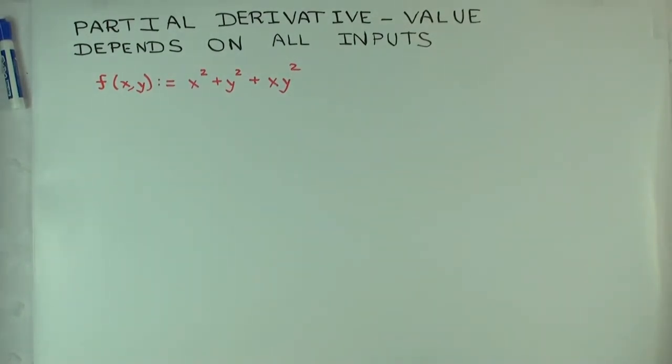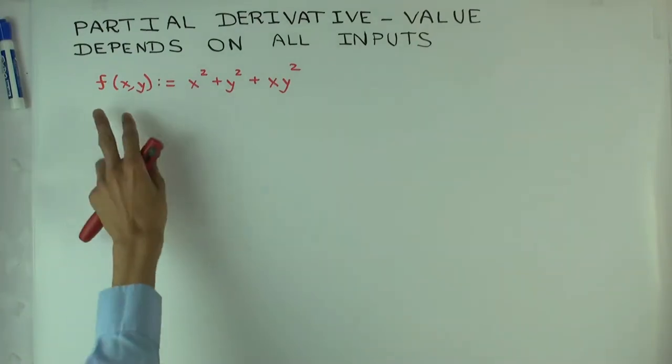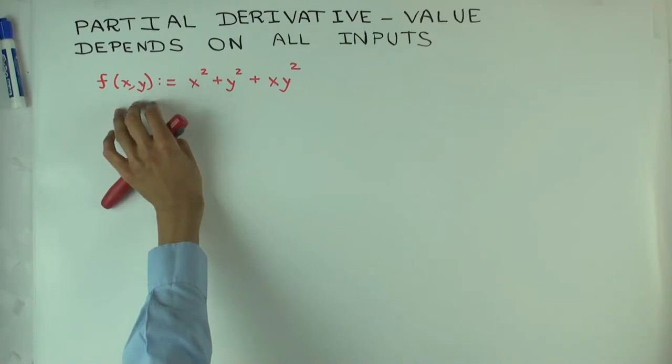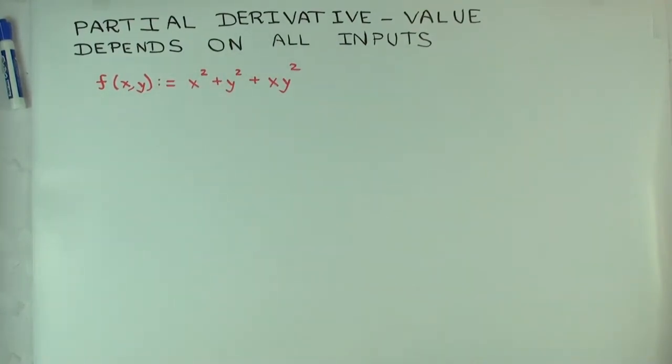What that means is that if I differentiate a function with respect to one of the inputs, the value of that partial derivative will depend not just on that input, but it could depend on the other inputs to the function.